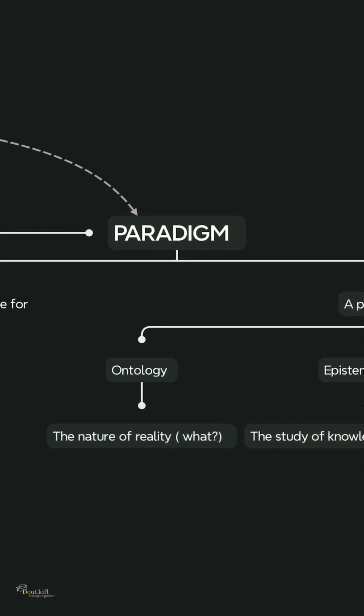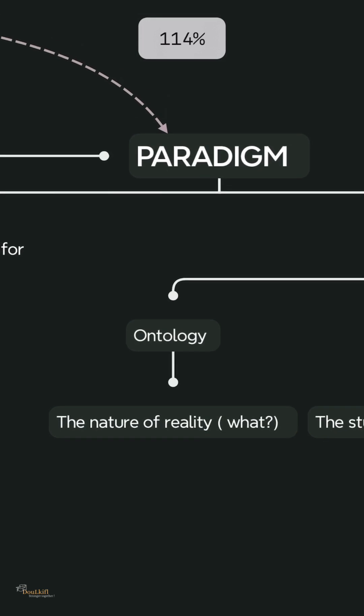The first is ontology. When we say ontology, we are talking about the nature of reality. We ask the question: what is reality? What is the topic? Ontology is a philosophical theory regarding the nature of reality.